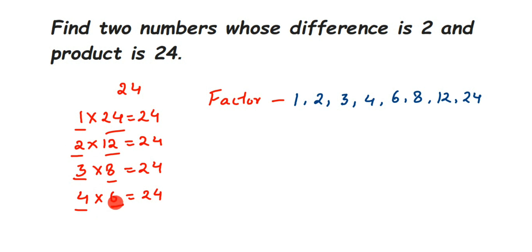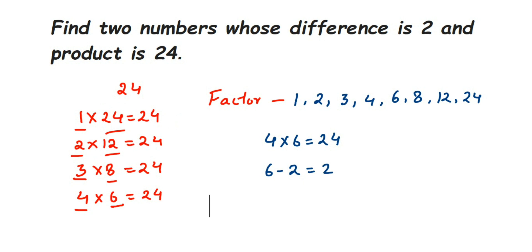For 4 × 6 = 24, when you subtract: 6 − 4 = 2. So this is the required answer — 4 and 6! Because 4 multiplied by 6 equals 24, and 6 minus 4 equals 2. Whenever this kind of question is asked, find the factors of the number and try combinations by subtracting to get the answer. Therefore, the required numbers are 4 and 6.